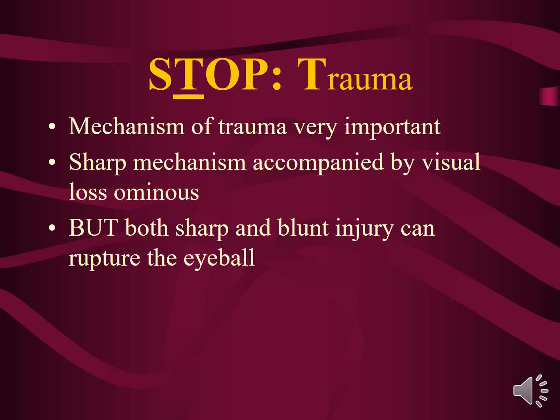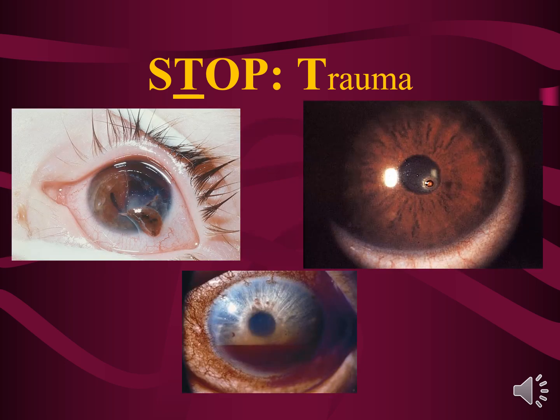The second item in STOP is trauma. The mechanism is very important — for example, if someone was playing sports and took a hit to the eye, you must think about an open globe. Both sharp and blunt injuries can rupture the eyeball. In an open globe, you can see a corneal laceration with extrusion of intraocular contents. This patient needs a shield on the eye and an emergent ophthalmology consult. Do not apply pressure, as it can worsen extrusion.